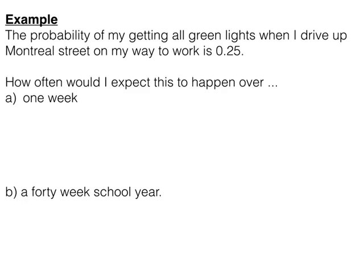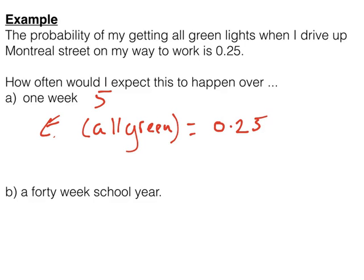So how often would I expect this to happen over one week? Well, a week is five times when driving up that road. So the expected number of all green is the probability of all green, which is 0.25 times the number of trials, which in this case is five, which is 1.25.